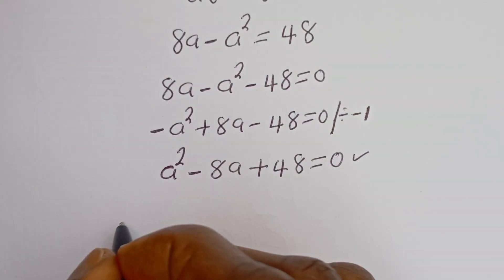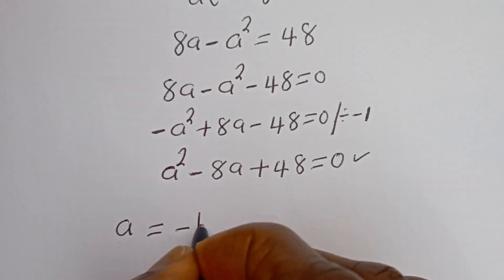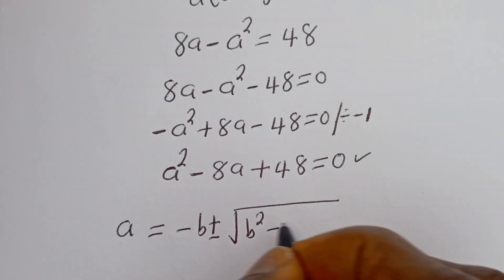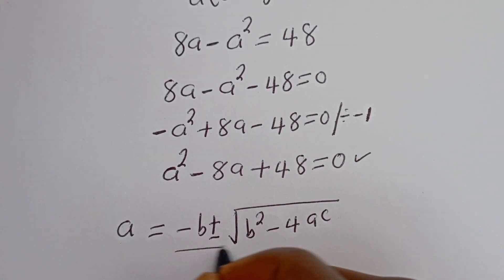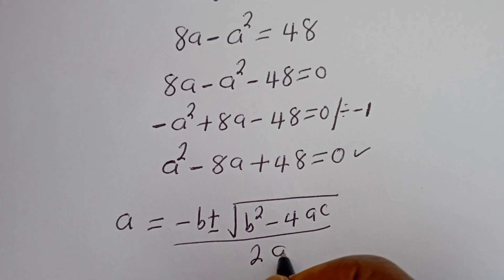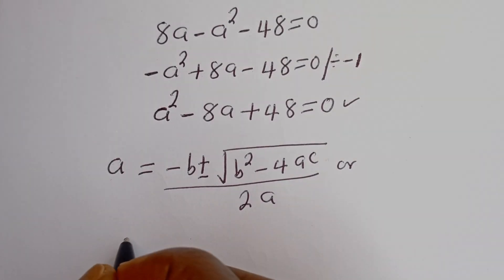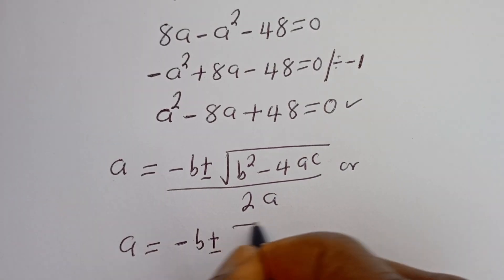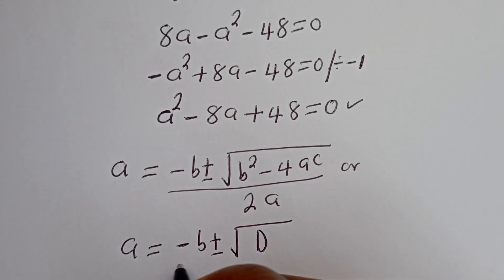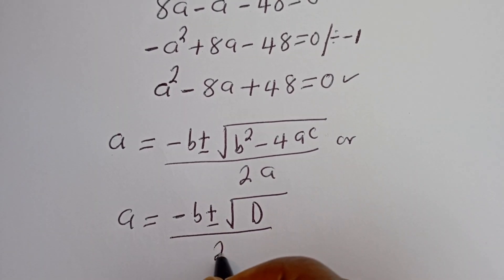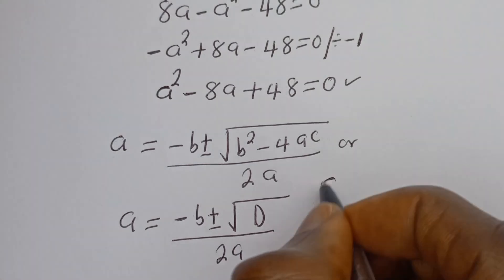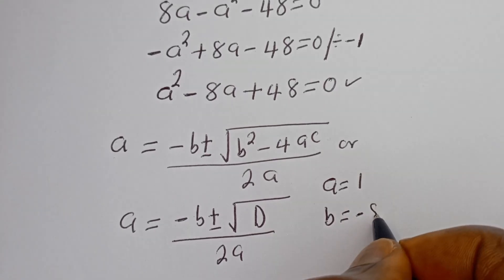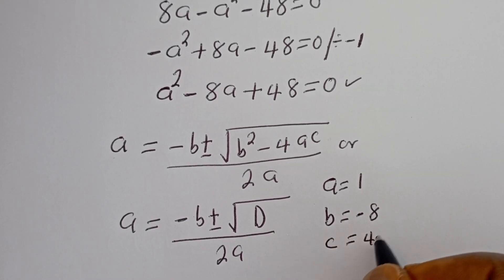Let's solve this using the quadratic general formula: A is equal to minus b plus or minus square root of b squared minus 4ac, all over 2a. From this equation, a is equal to 1, b is equal to minus 8, and c is equal to 48.